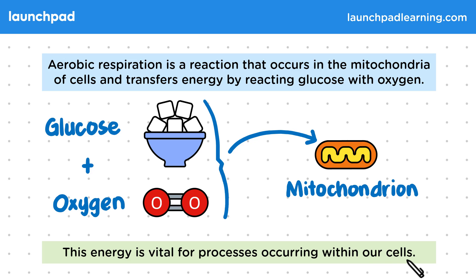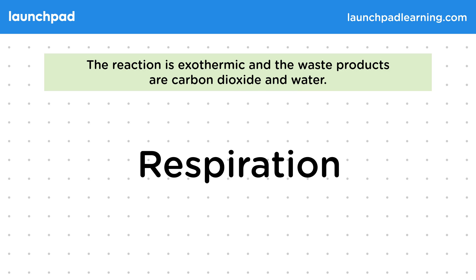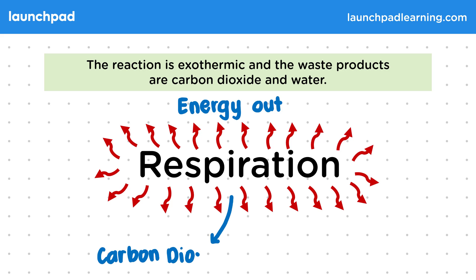What type of reaction is respiration? The reaction is exothermic, and the waste products are carbon dioxide and water. Exothermic means energy is transferred outwards, with carbon dioxide and water being released as waste products.